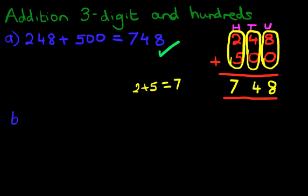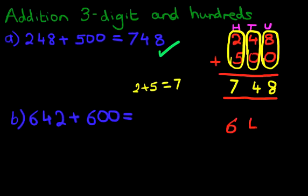Now let's go to our second example. What is 642 plus 600? Again, we're going to write this question down in the vertical format. So let's do that. We've got 642 plus 600.